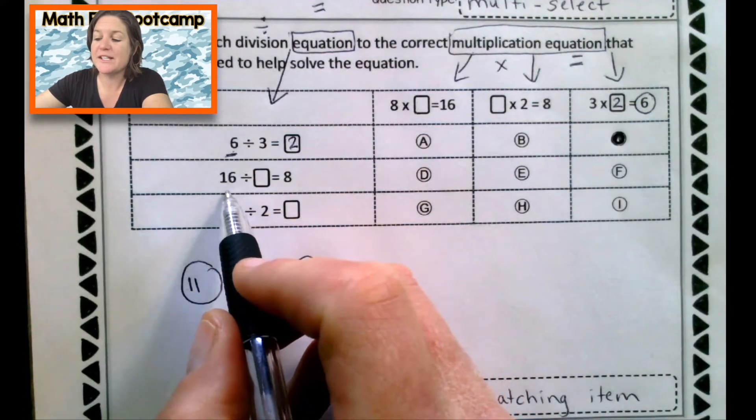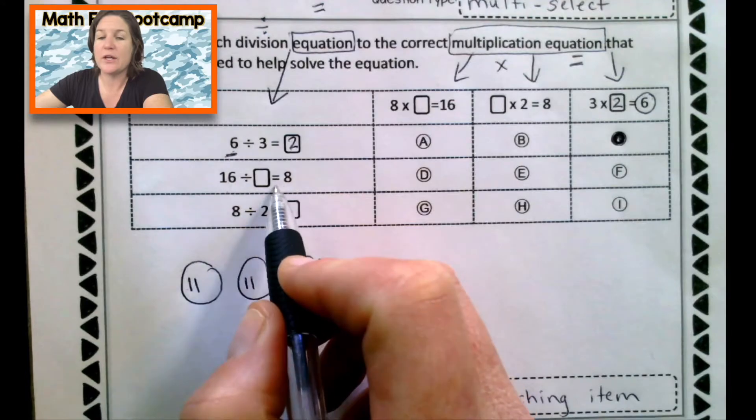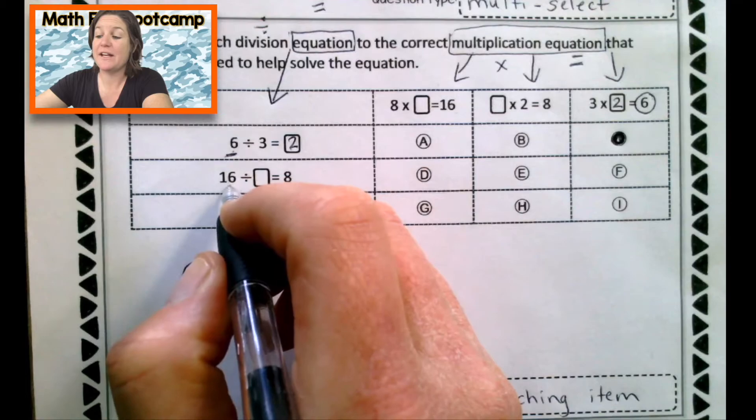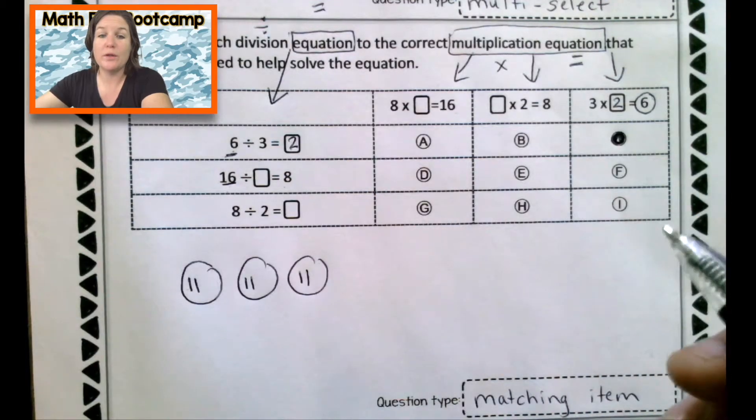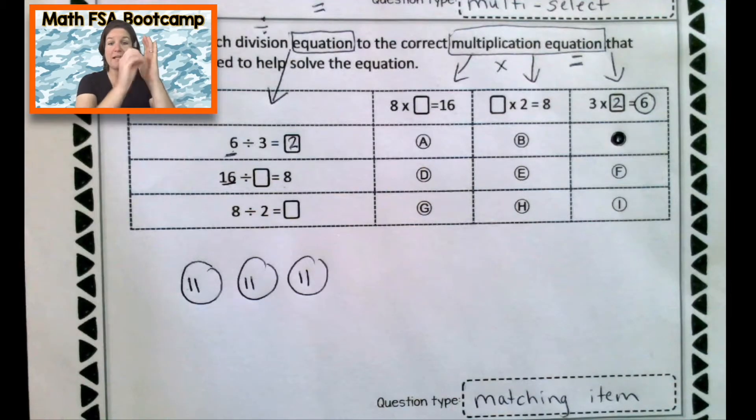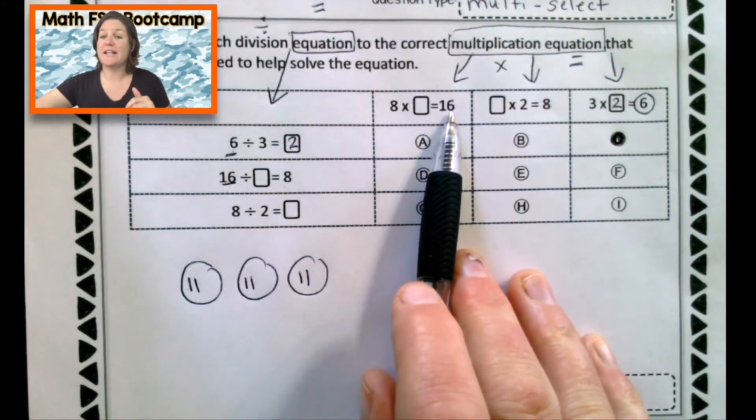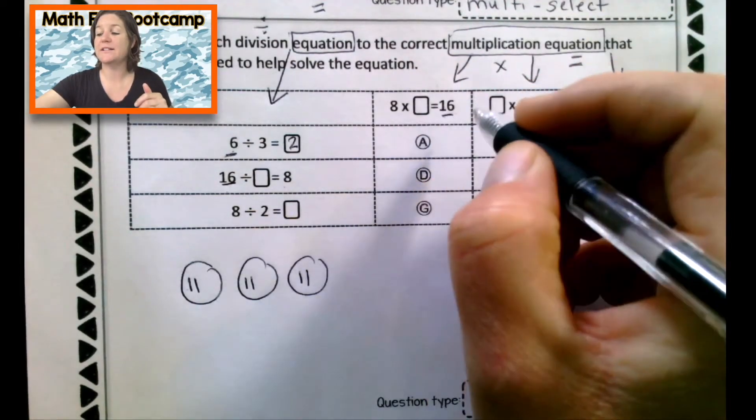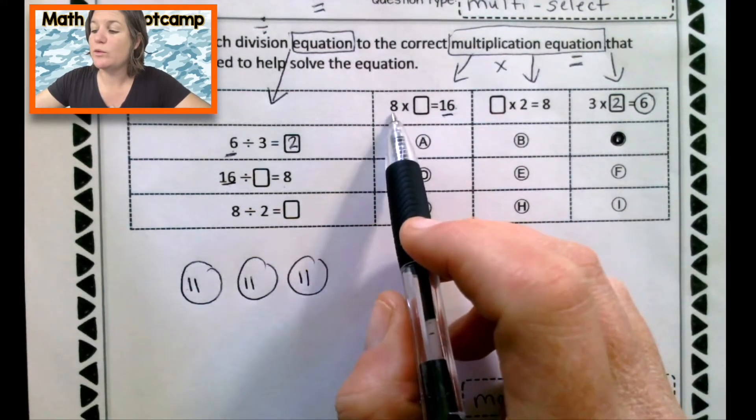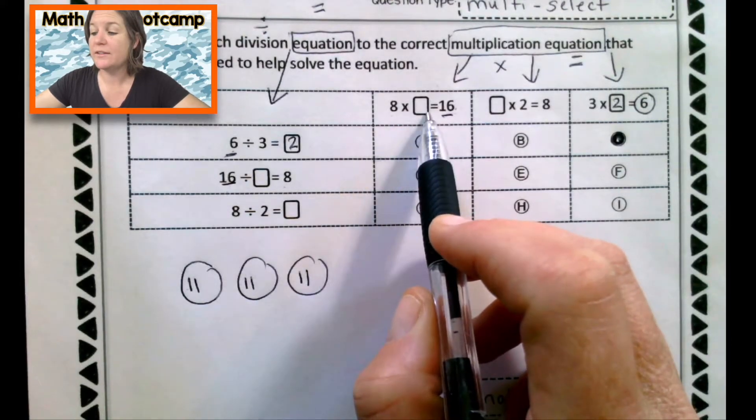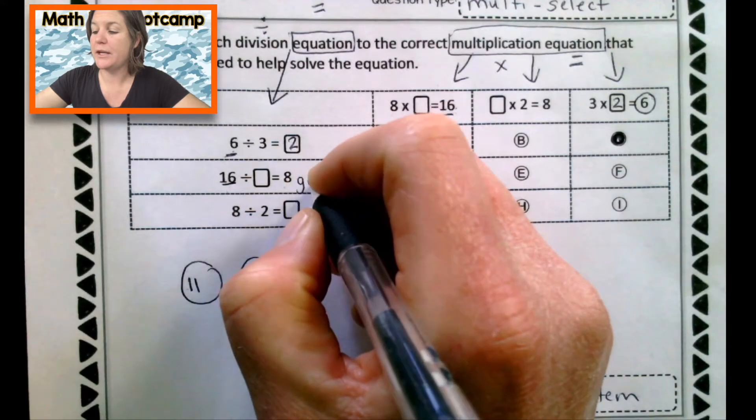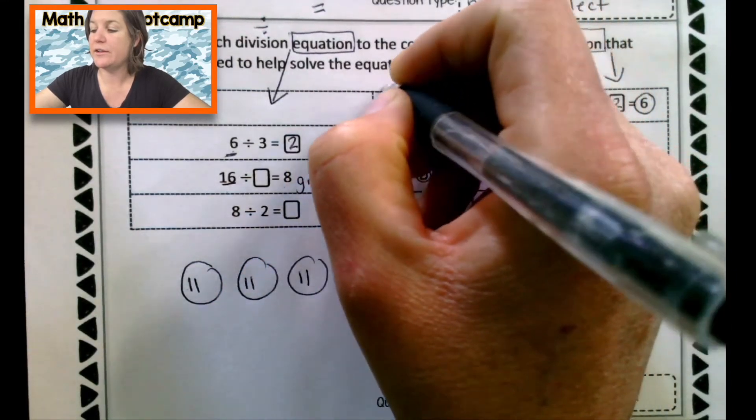Let's try the next one. We have 16 divided by what equals eight. Well, I'm seeing, I'm thinking that it might be this one right here, because again, I've got 16 as my total. It's my dividend for division. It's what I'm dividing out. And then I have 16 as my total or my product here in my multiplication equation. So this would be eight groups of what? So let me divide this out now and make eight my groups.